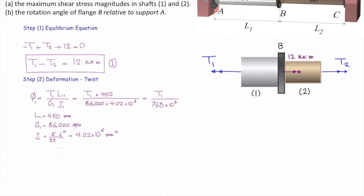Let's do that for the second element, similar to what we did before. Phi2 is TL over GJ. T2 is unknown. Length of the second element is 200. G is 45,000 megapascal. And J is calculated from this equation. And phi2 will be equal to T2 divided by 138 times 10 to the sixth. That's step number two.